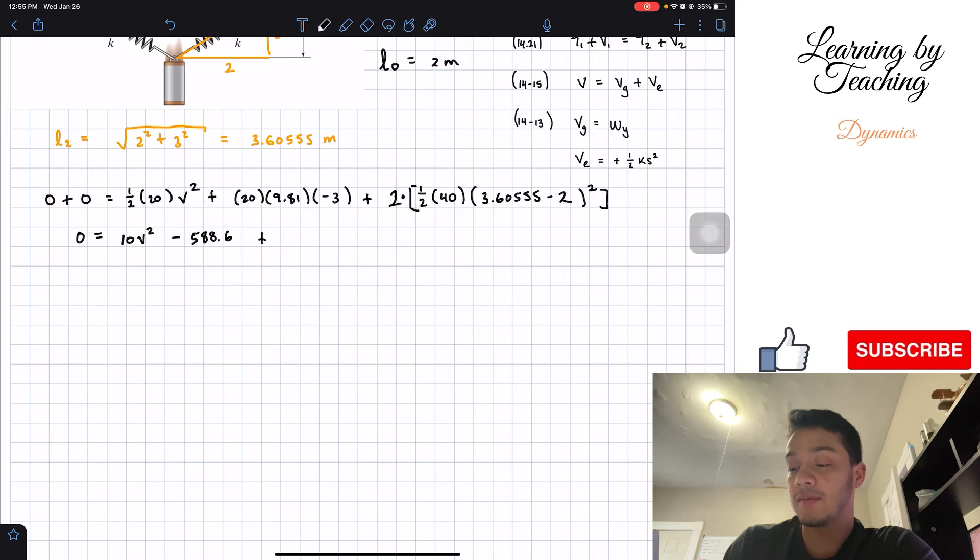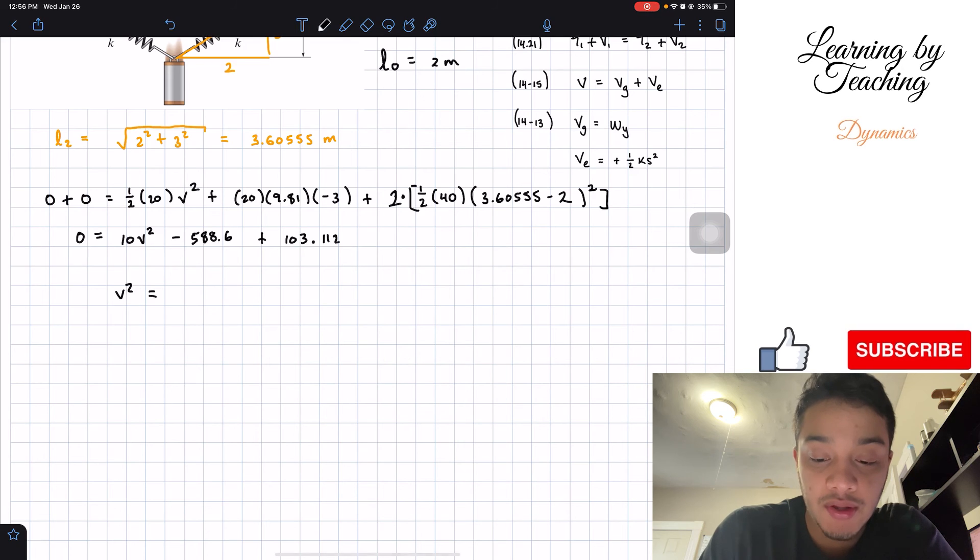Then we will have plus, and if we multiply the number inside... We will get a total of 103.112. Then we're going to keep solving for velocity. That means that the velocity squared will equal 588.6 positive minus 103.112 divided by 10.